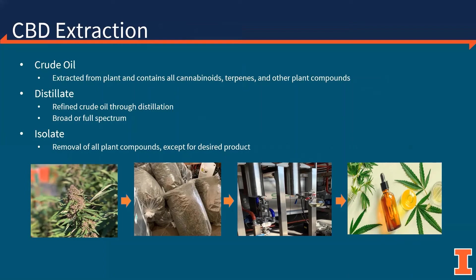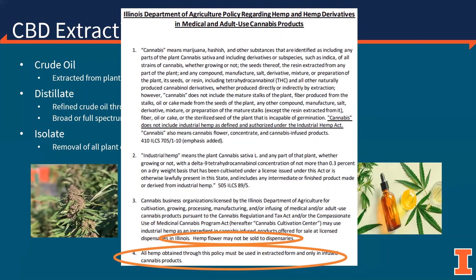Regarding extraction terminology: crude oil is extracted from the plant and contains all cannabinoids, terpenes, and other plant compounds in a raw, crude form of the hemp oil. This material can then be further refined through distillation to produce both broad or full-spectrum distillate and can be refined even further into isolate, which removes all plant compounds except for the desired product — in many cases CBD. Recently, the Illinois Department of Agriculture released a notification enabling cannabis cultivation centers to use industrial hemp as an ingredient in cannabis-infused products offered for sale at licensed dispensaries in Illinois, though hemp flower may not be sold to dispensaries.